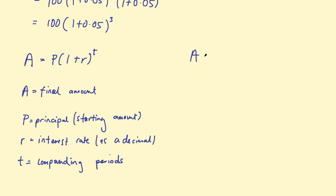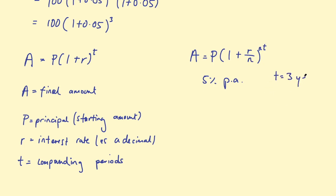Sometimes this is written differently as P times (1 + r/n) to the power of n*t, where n is the compounding periods per year. This handles cases where you have a rate per annum but compound monthly — you'd divide by 12, and for three years compounding monthly you'd have 36 periods. I generally just do that calculation before putting it into the formula, changing three years monthly to 36 and plugging it in for t. Either formula is fine — use whichever you're more comfortable with.